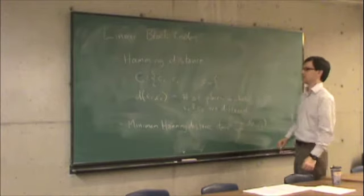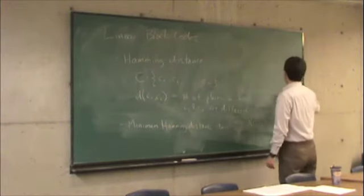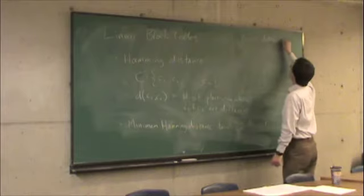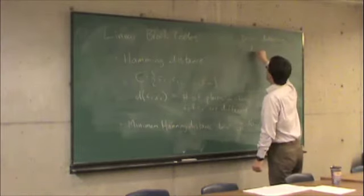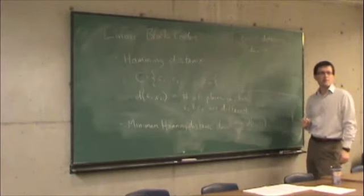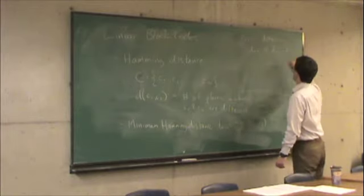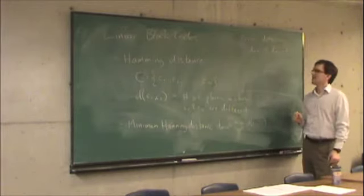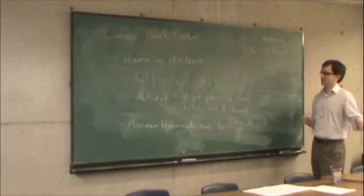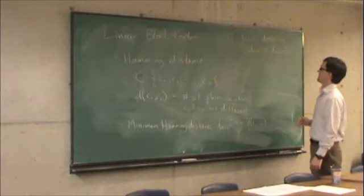So we also said that minimum Hamming distance is related to the error detecting and error correcting properties of the code. As far as error detecting is concerned, a code with minimum Hamming distance Dmin can detect up to Dmin minus one errors. The reason is in the worst case, each error takes you closer to a different code word. You have to make at least Dmin errors before you arrive at a different code word, so you're guaranteed to be able to detect up to Dmin minus one.